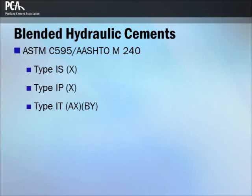The letters X and Y in the designations represent the nominal mass percentage of the supplementary material, with the remainder being Portland cement. For Type IT, which are ternary blends, A represents the supplementary material that has the highest percentage, while B is the lower percentage.